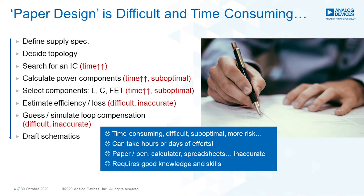Doing a paper design can be difficult and time consuming. You need to define the supply specifications, choose a power topology, and search through websites to find the best devices. Even harder is trying to calculate the values of the resistors, inductors, capacitors, and MOSFETs, and then choose the proper components that meet the design criteria. Of course, estimating the efficiency and power loss is difficult, and designing the loop compensation — which determines the transient response — is almost impossible.